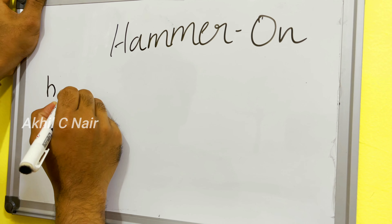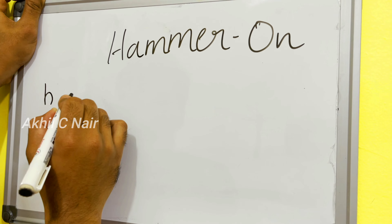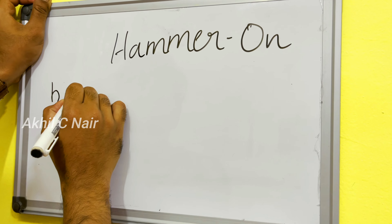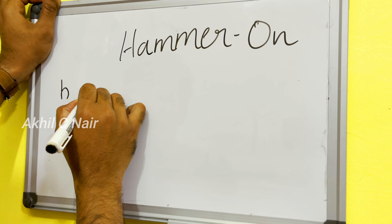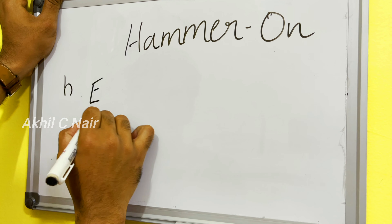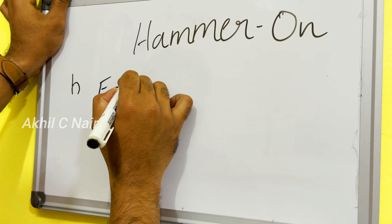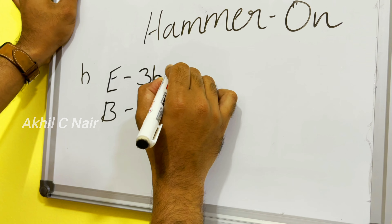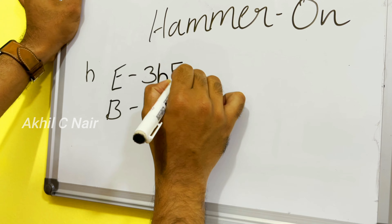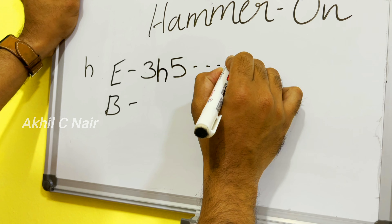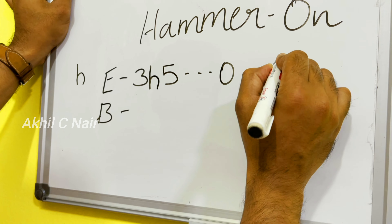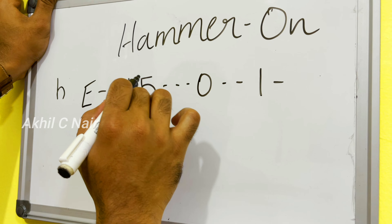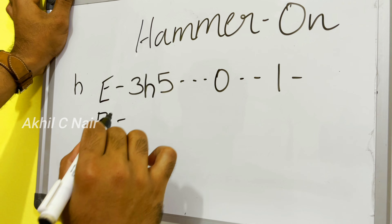We have already mentioned the guitar tablature in the video. Now let's take an example: the first string at the 3rd fret, then the 5th fret. So the notation is 3 on the first string then the 5th fret — the three to five point is a hammer-on.